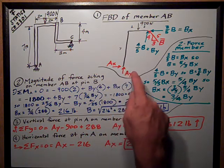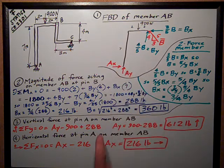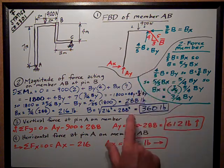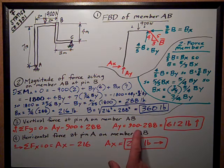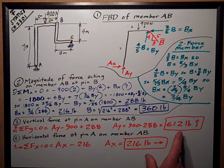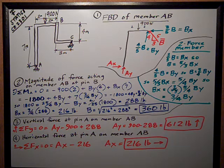AY, which is positive up by my assumption, minus 900 newtons plus 288, which is the BY force that I got from up here. So AY is equal to 900 minus 288 equals 612 pounds up, meaning my assumption of up was correct.